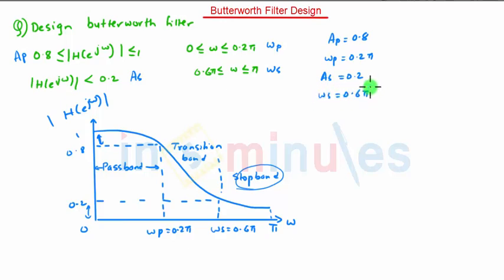This is a general method to find out the values. Now let us calculate the specifications of analog filter. We will first obtain omega P and omega S and use the bilinear transformation. Now using bilinear transformation,